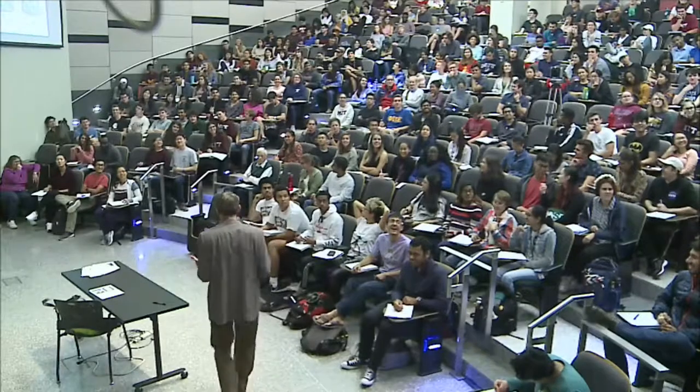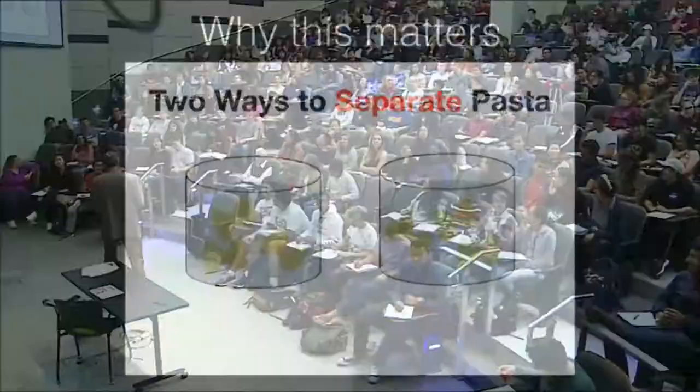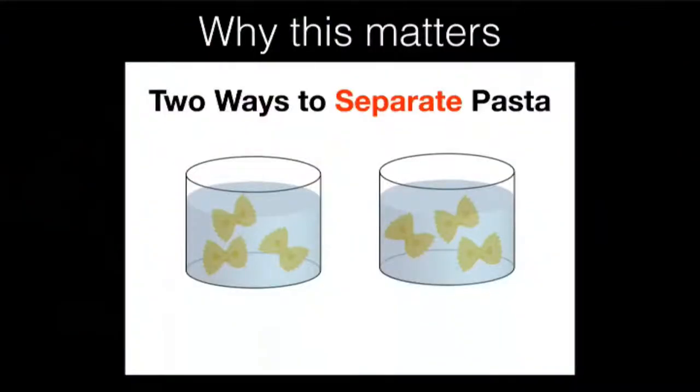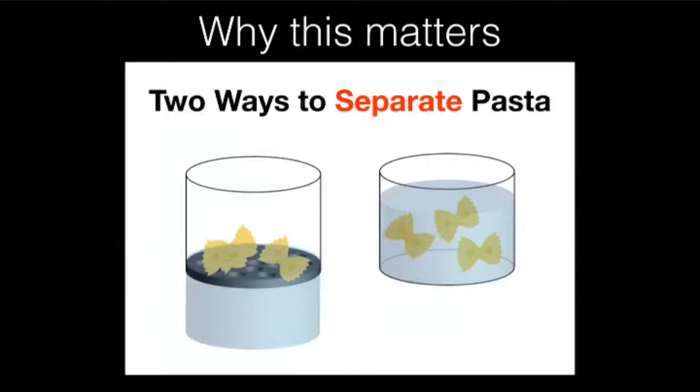But this does get me to the why this matters, which has to do with how you cook pasta. And of course, since we're talking about O2, when I have finished cooking pasta, what do I do? I pour it through a colander.